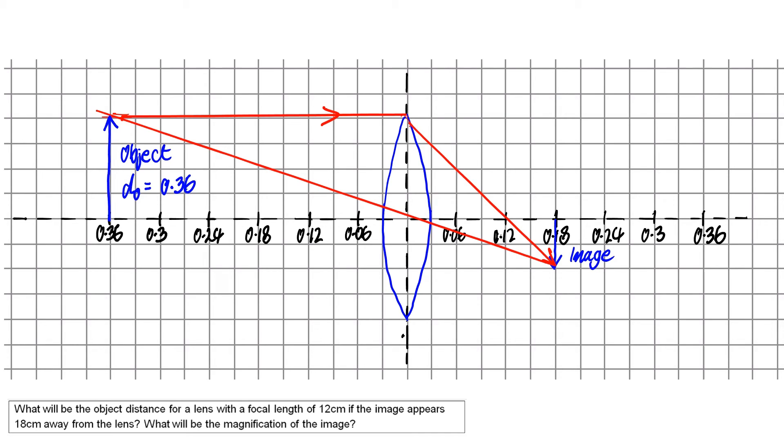Now, to get the magnification, I need to know the heights of both objects. So the object arrow itself has a height of 4 units or 12 centimetres. And the image arrow has a height of 2 units or 6 centimetres. So you can basically see that if the image has a height of 6 and the object has a height of 12, then the image is half the size of the original object. So in other words, the magnification little m is 0.5, half size.